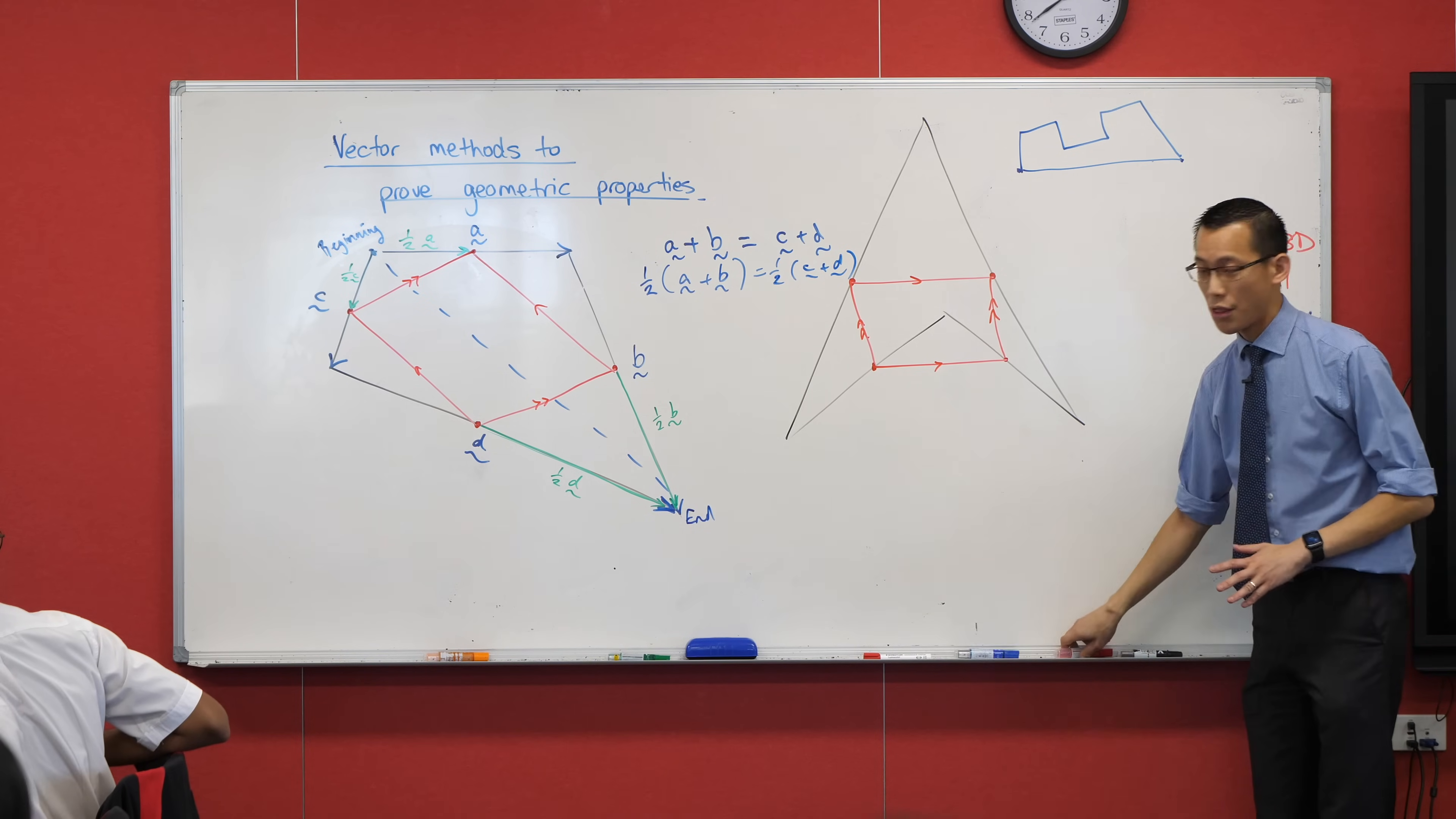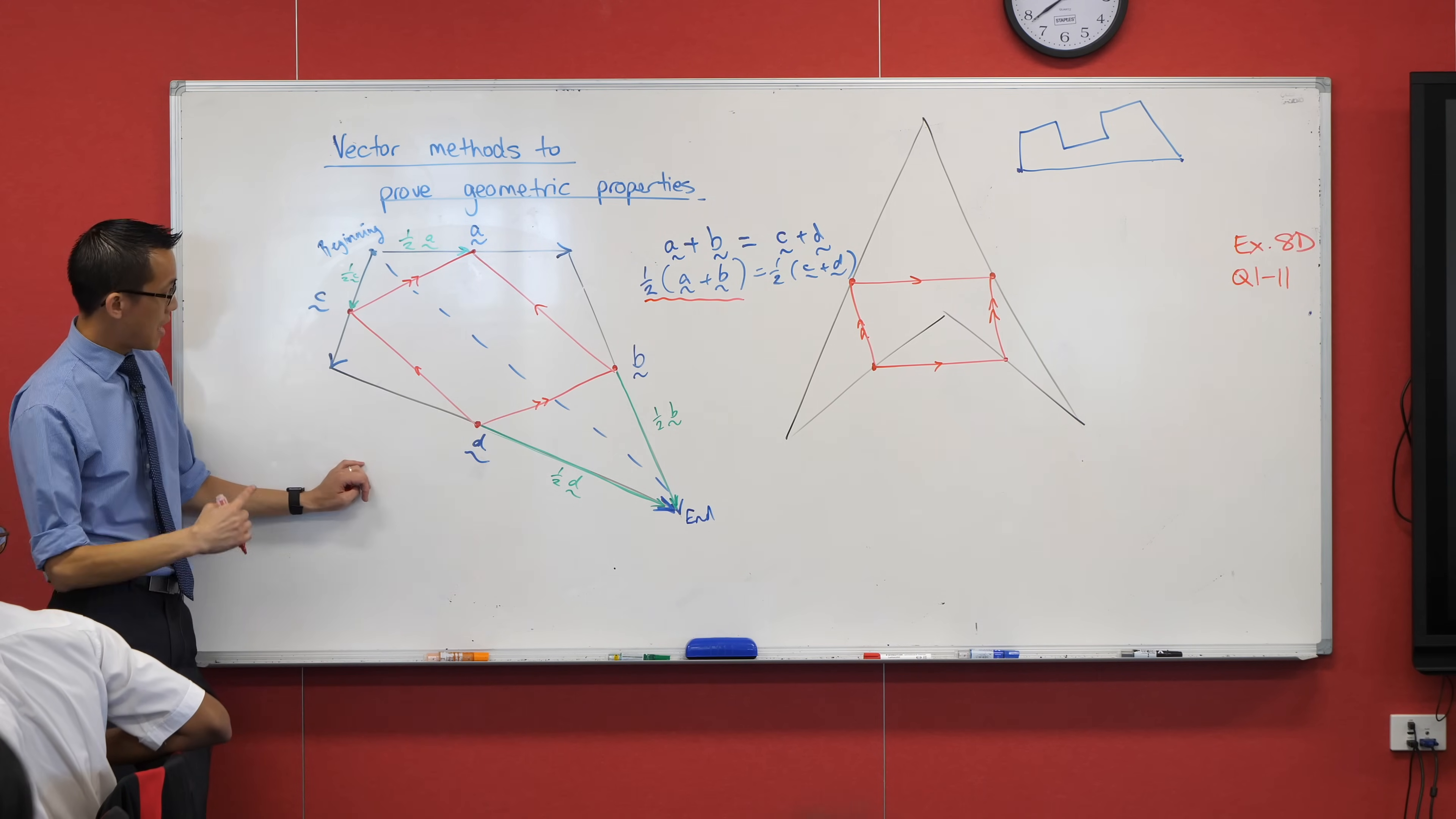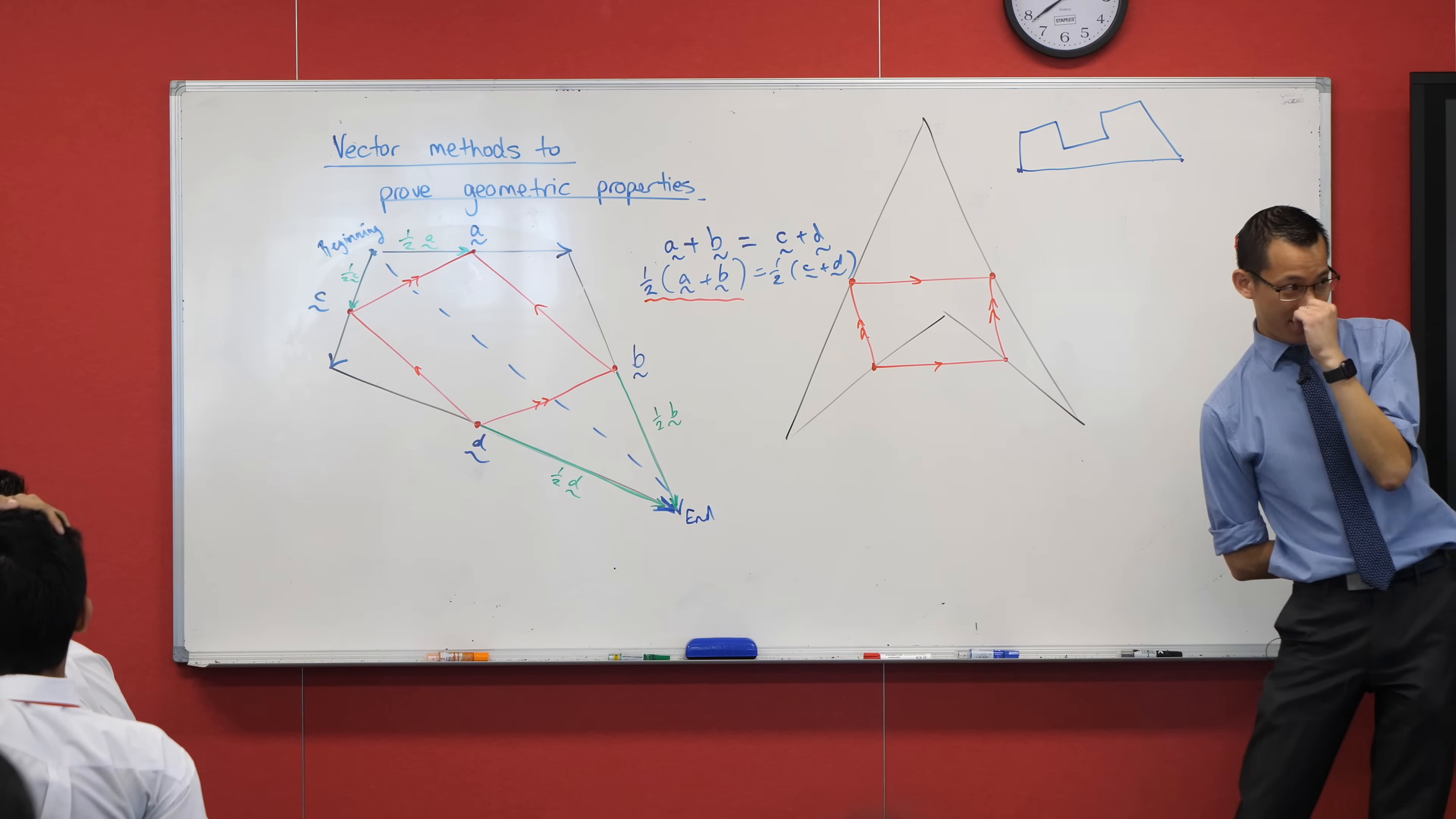Believe it or not, those are the two lines. That's it. You're still looking at it thinking, it's not quite clicking for me. Okay. Half of A plus B. That's on the diagram. I just haven't actually put it on yet. Where is half of A plus B? Where is it? Have a think.